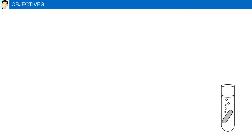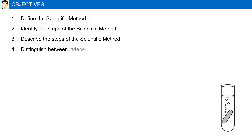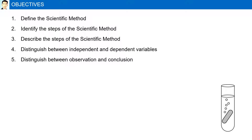Objectives: Define the scientific method. Identify the steps of the scientific method. Describe the steps of the scientific method. Distinguish between independent and dependent variables. Distinguish between observation and conclusion.